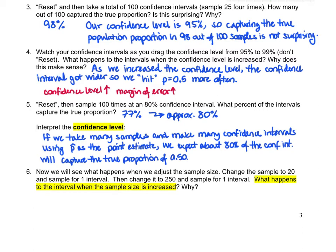Now let's try holding the confidence level steady but changing the sample size. We're going to start out with a sample size of 20 and take one sample — notice the width of the confidence interval. Now change the sample size to 250 and take one sample. When the sample size is large, the interval narrows. You might remember the relationship between the standard deviation of a sampling distribution and the population: when sample size goes up, variability goes down. The margin of error decreases because it's based on the standard deviation.